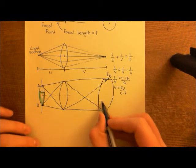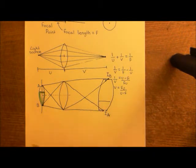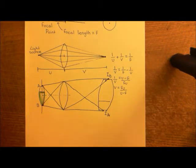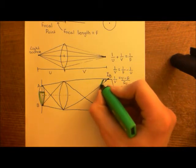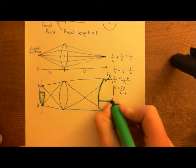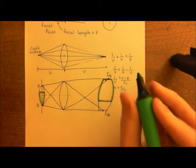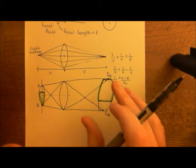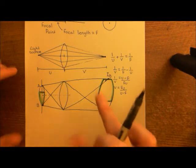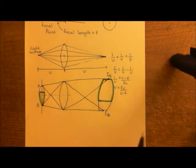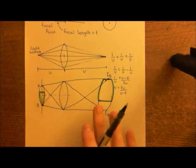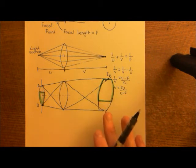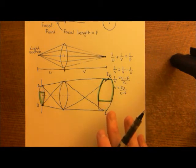That explains why magnifying glasses are capable of magnifying images. But of course we don't usually see an image that's upside down, so what are we usually doing with a magnifying glass? I'll explain in a moment why, when you usually use a magnifying glass as we're doing right now, you are not seeing an inverted image.